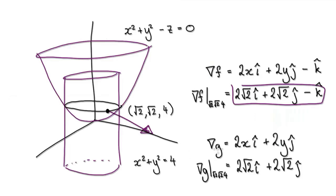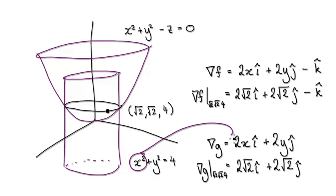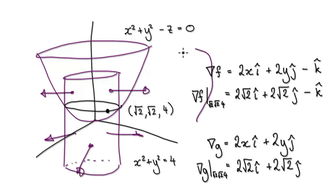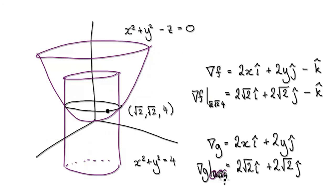Now we need to look at the cylinder — let's call it G. Work out grad G. Take the partial derivative with respect to X, take the partial derivative with respect to Y, and there is no Z, so when you take the partial derivative with respect to Z it will be 0. Grad G allows you to work out all the vectors that shoot straight out of the cylinder. Evaluate grad G at (√2, √2, 4), located at our point — that will shoot straight out of the cylinder.